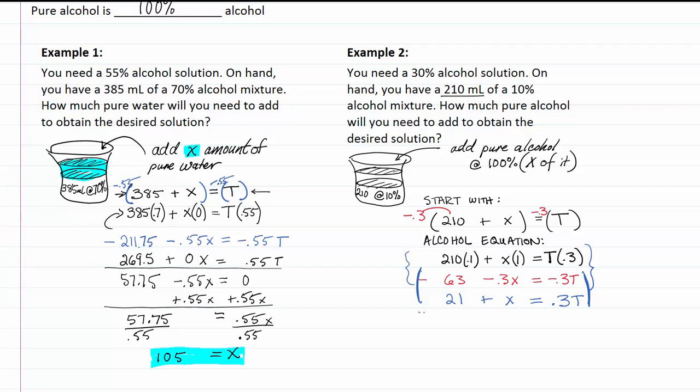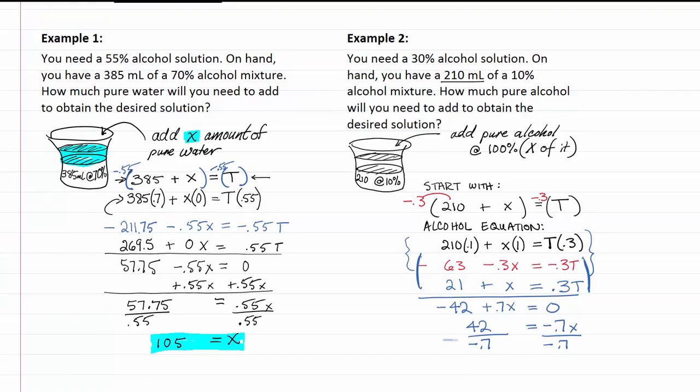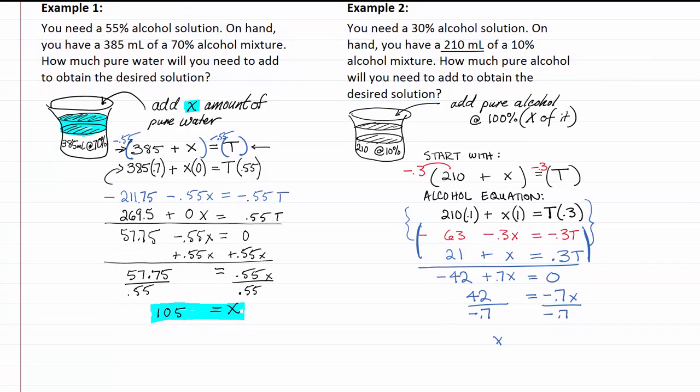Let's add them together finally. We get negative 42 plus 0.7x is equal to 0. So 42 is equal to negative 0.7x divide by 0.7, negative 0.7 and we get x is equal to 60.